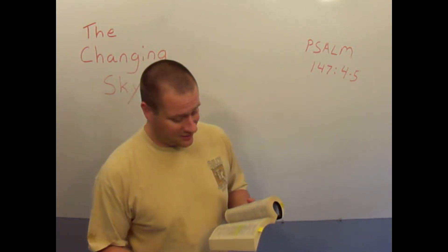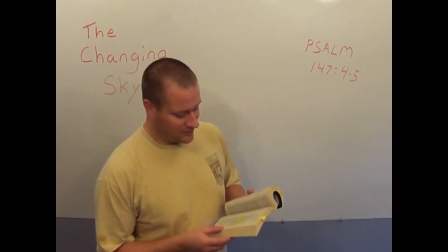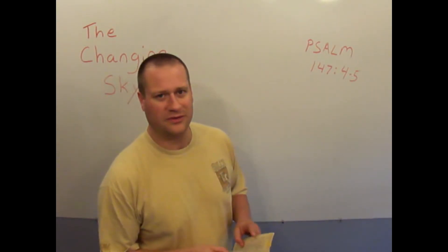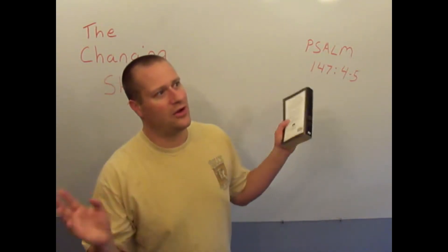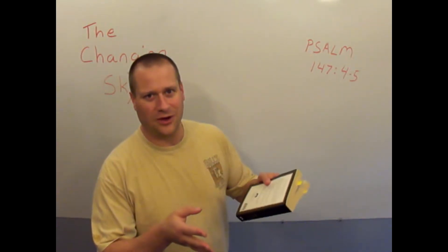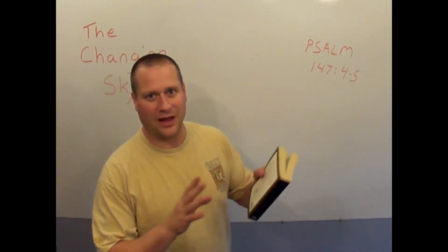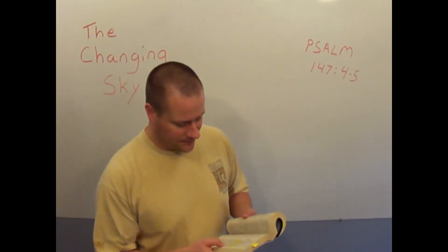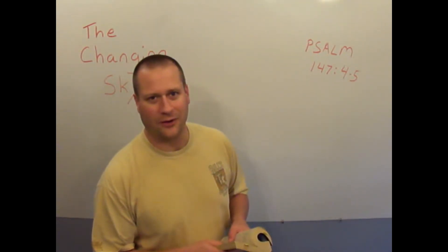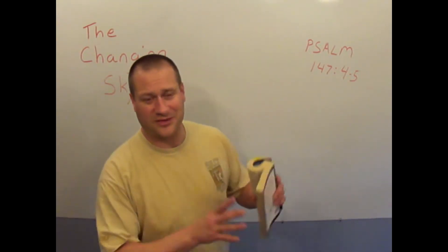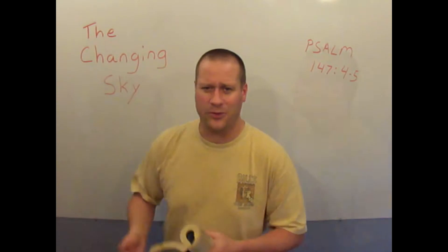Even more interesting is the verse before it that says, As the Lord builds up Jerusalem, he gathers the outcasts of Israel. He heals the brokenhearted and binds up their wounds. I thought, if God knows all the names of the billions of stars out there in the universe, how much more does he know the names of every soul on the face of the planet? And he wants to bind up their broken hearts and heal the brokenhearted.